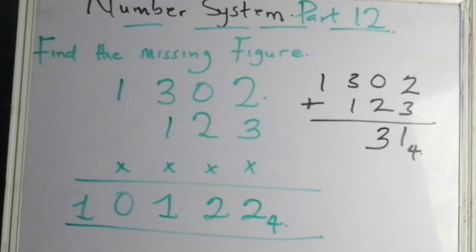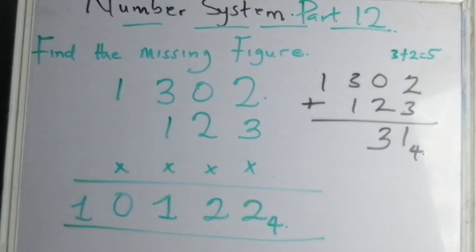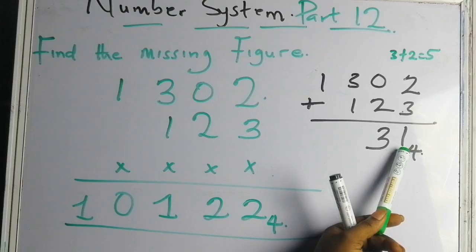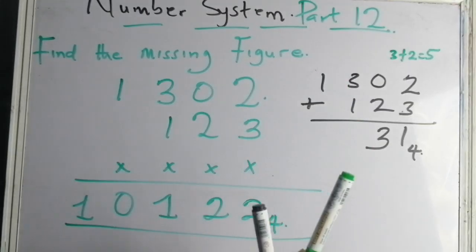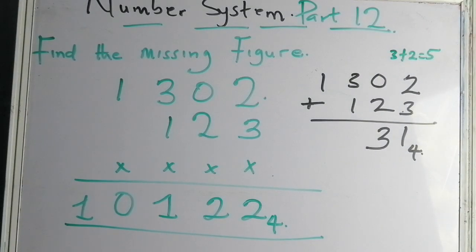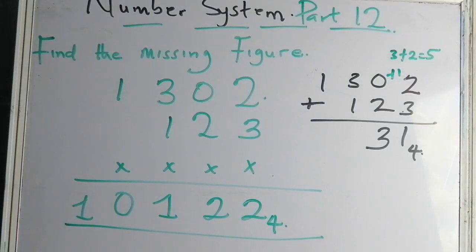For the next column, three plus two equals five. Four goes into five one time with remainder one — so carry one. One plus zero, plus one, plus zero gives one. Then one plus two gives three. Three is not up to the base four, so we write three.